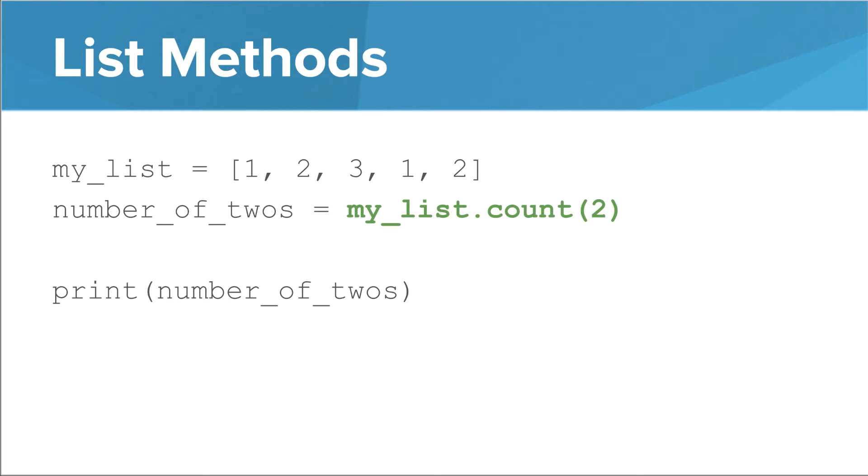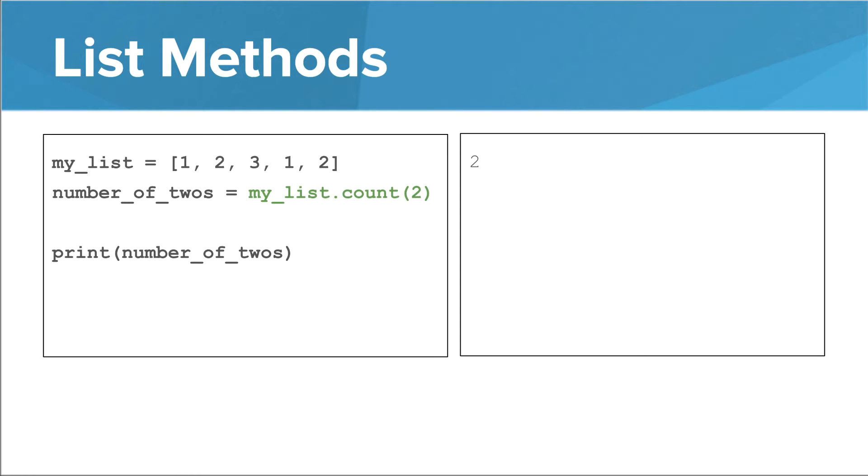Lists have methods. Here's a pretty simple one, count. You call it like this, and it returns the number of times the argument occurs in the list. So in this case, the number 2 occurs twice in the list, so count returns 2.